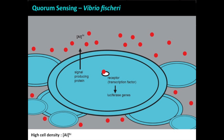When the bacteria reach high cell densities, there's a lot of that autoinducer signal. It passes freely through the membrane and binds to its receptor — in this case cytoplasmic. There's a conformational change, which reveals a DNA binding domain, and that complex of the signal and receptor lands on the promoter of the luciferase genes, and all of the bacteria in the culture bioluminesce.